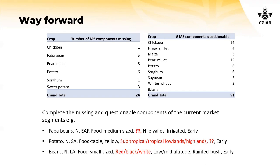We've got some questionable components — those total 51 across the number of crops. To give an idea of what I mean: for fava beans in Eastern Africa, it's for food, medium size, but we don't know the color — whether we're talking green, yellow, purple, black, or brown fava beans. For potatoes in Southern Asia, it's for food, table potatoes, yellow flesh, but we've got three growing regions mixed together: subtropical, tropical lowlands, and highlands. Odds are that it's not one ideal product that serves all three of these growing regions, so we'll be looking to sort that out as we move ahead. A similar questionable component exists for beans in terms of color — we've got red, black, and white mixed together for Latin America, and we'll be working with CIAT to sort that out.